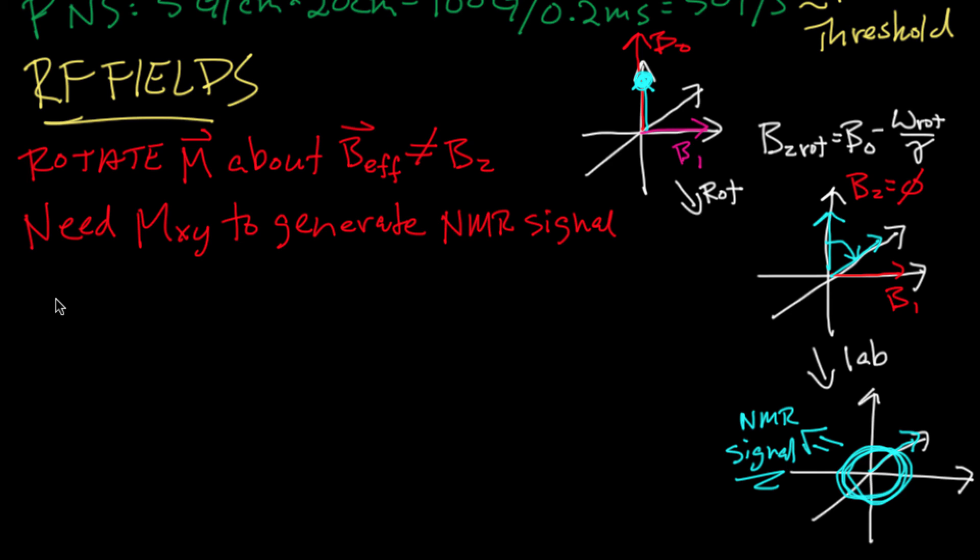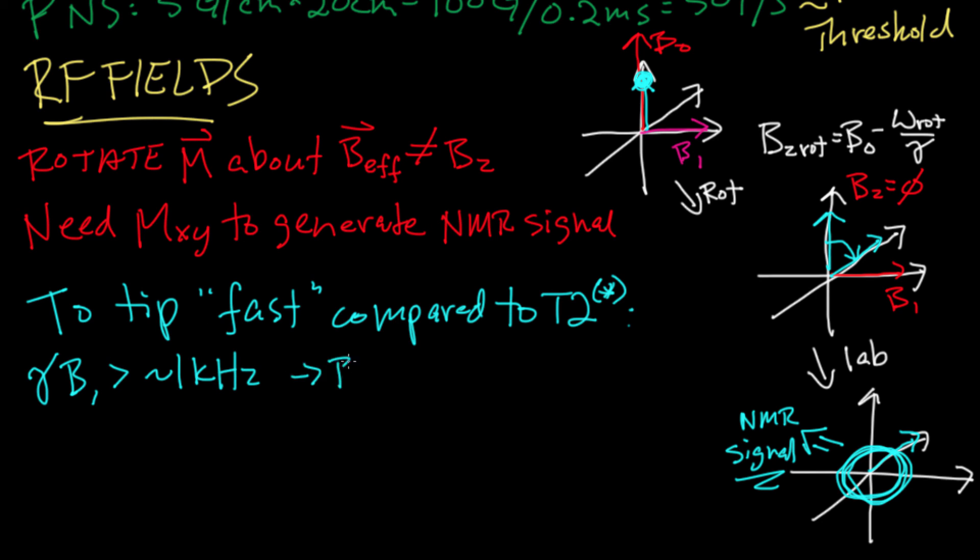So to calculate how big you want the B1 fields to be, the main requirement is that you want to tip magnetization rapidly compared to relaxation processes like T2 and T2 star, which again can be as fast as about a millisecond. So you want the rotation frequency, which is gamma B1, to be about a kilohertz in order to tip things in the millisecond range. And that means that the B1 itself needs to be on the order of 0.1 Gauss. The calculation of the power that's required to generate a particular B1 field is much more complicated than it was for both the main field and the gradient fields. And that's because the power is dominated not by the interaction between the B1 field and spins, but instead the interaction with the B1 field and the lossy structures of the body.